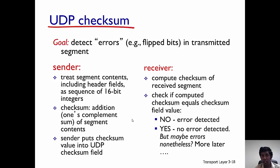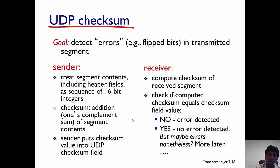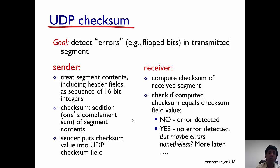When the receiver receives the UDP segment, it computes the checksum of the received segment. If the checksum the receiver computes equals the checksum in the field, it means there is no error — the two checksums have matched — and the UDP segment can be delivered to the application. If there is a difference, then there is some error and the UDP segment can be discarded if needed.